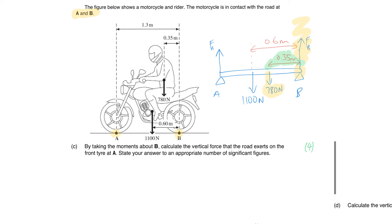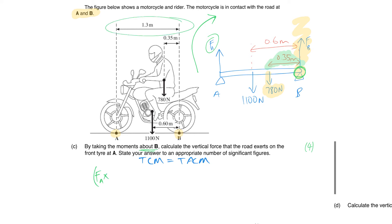Part (c) is four marks — taking moments about B, calculate the vertical force the road exerts on the front tire at A. We're trying to find force FA. Using the principle of moments: total clockwise moments = total anticlockwise moments. Taking moments about B, force FA would tend to move the system clockwise, so: FA × 1.3 is the total clockwise moment — that's the only clockwise moment.